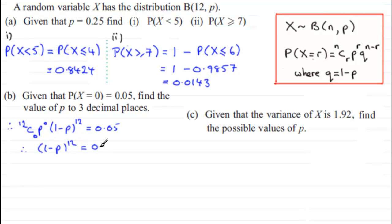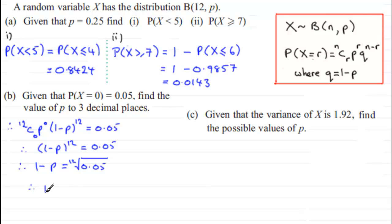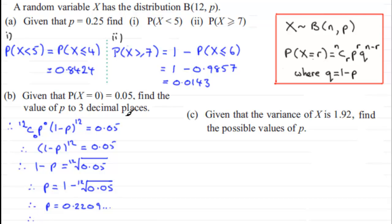So (1 minus P) to the power 12 equals 0.05. To get 1 minus P, I take the twelfth root of 0.05. Adding P to both sides and subtracting the twelfth root of 0.05, we get P equals 1 minus the twelfth root of 0.05. Working this out on the calculator gives P equals 0.2209...